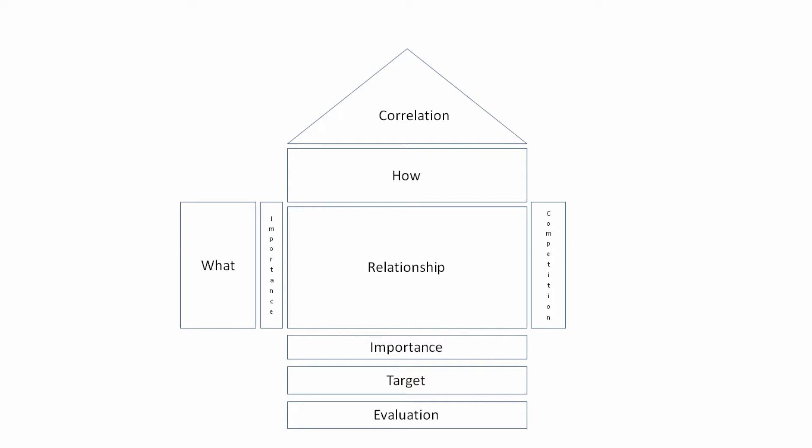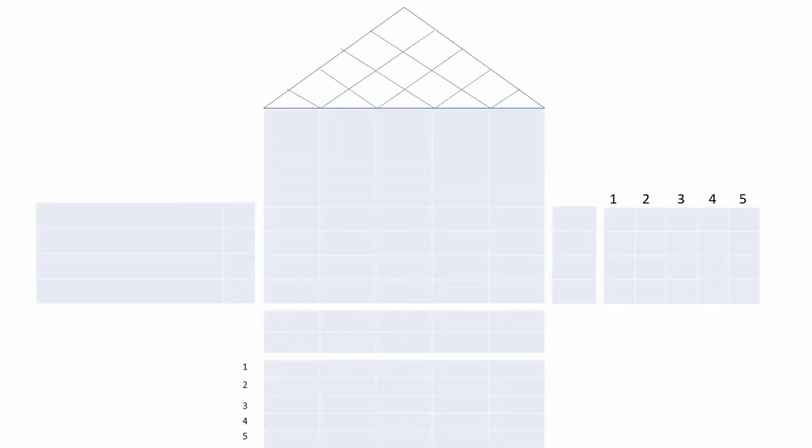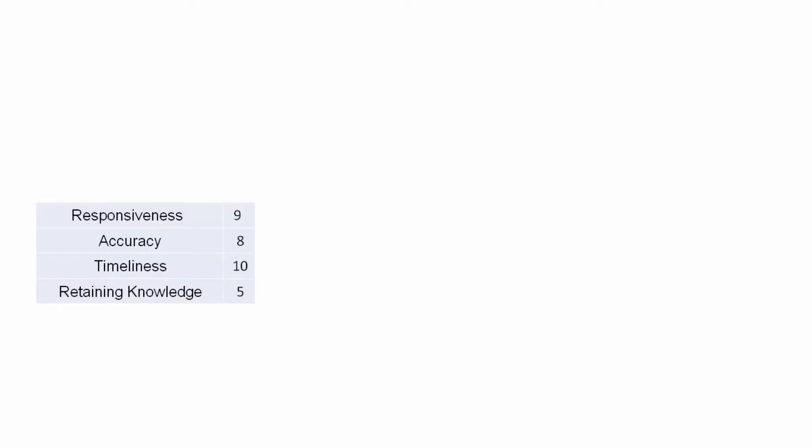Let's take an example to understand this better. This is the template which can be used to create a QFD. In the example, we have to create a customer service center for a company. What the customers want from us is responsiveness, accuracy, timeliness, and retaining knowledge. They have given an importance rating of 10 to timeliness, 9 to responsiveness, 8 to accuracy, and 5 to retaining knowledge.